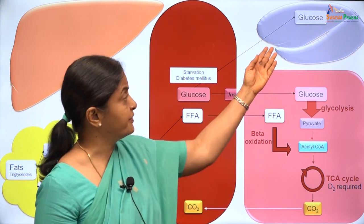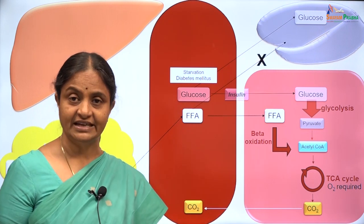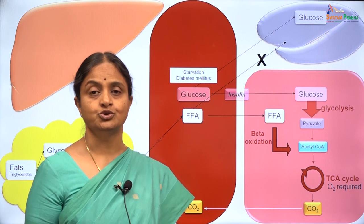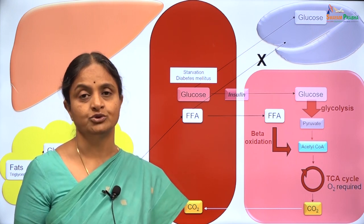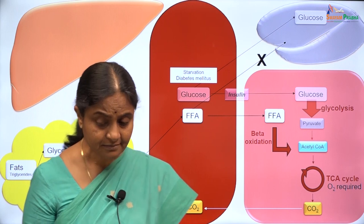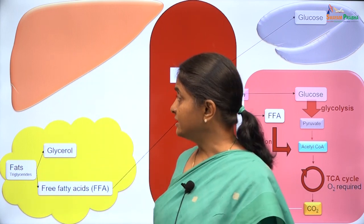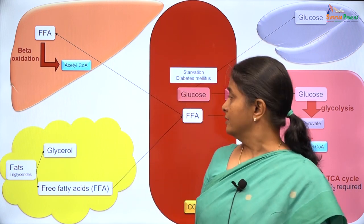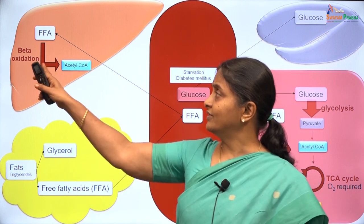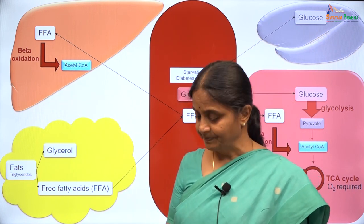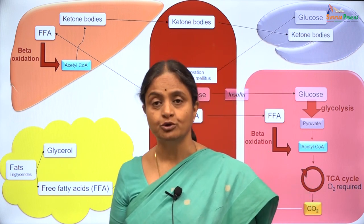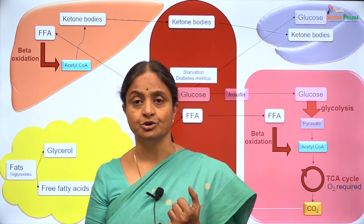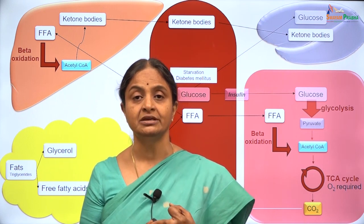There is one issue: the brain will not take up free fatty acids because they cannot cross the blood-brain barrier. So the brain needs another source of fuel in conditions where glucose is in short supply. That fuel is provided by the liver. Free fatty acids are converted to acetyl-CoA in the liver and further converted to what are called ketone bodies — a term referring to a set of three compounds: acetone, acetoacetate, and beta-hydroxybutyric acid.